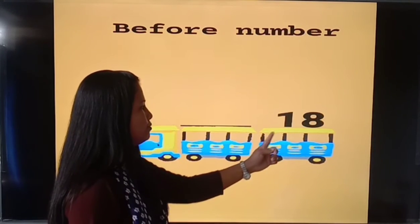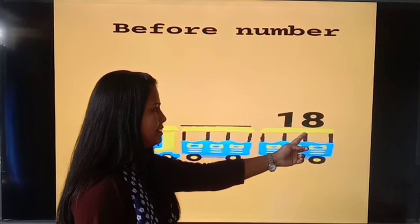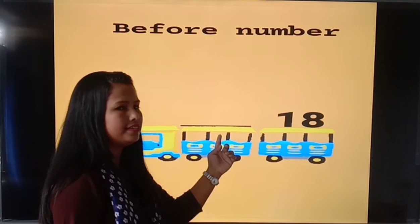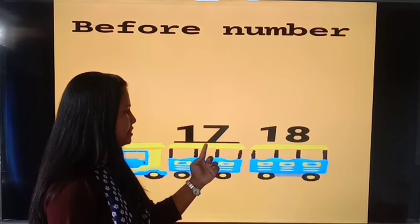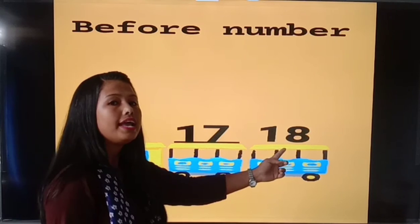Next. Eighteen. One, eight. Eighteen. Then what comes before eighteen? One, seven, seventeen. Seventeen comes before eighteen.